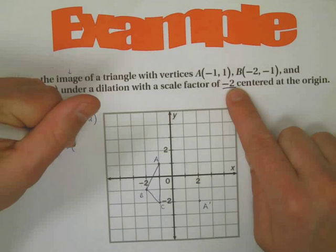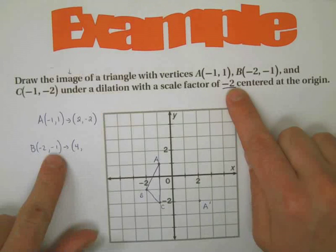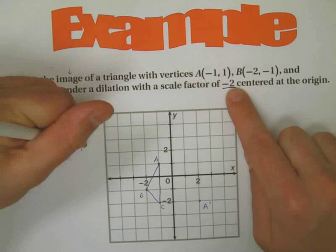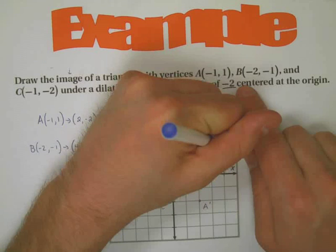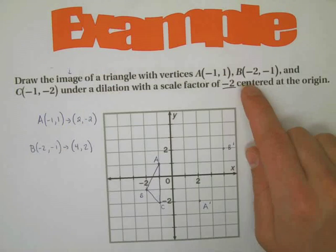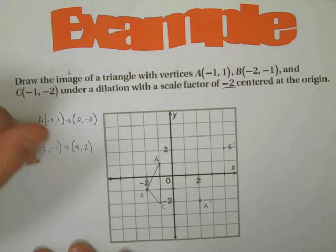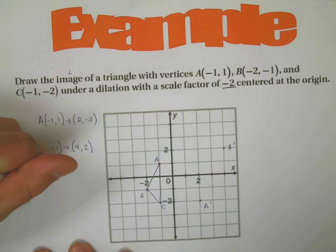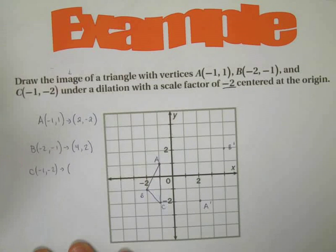B which was at negative two, negative one is now going to be at, two times negative two is four, negative one times negative two is positive two. It's going to be at four, two. There's my new B.